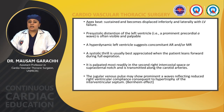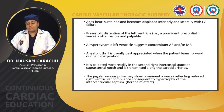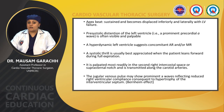The apex beat is sustained and becomes displaced inferiorly and laterally with LV failure. Presystolic distension of the left ventricle — prominent precordial A wave — is often visible and palpable. A systolic thrill is usually best appreciated when the patient leans forward during full expiration, palpated most readily in the second right intercostal space or suprasternal notch, and transmitted along the carotid arteries. The jugular venous pulse may show prominent A waves reflecting reduced right ventricular compliance, known as the Bernheim effect.